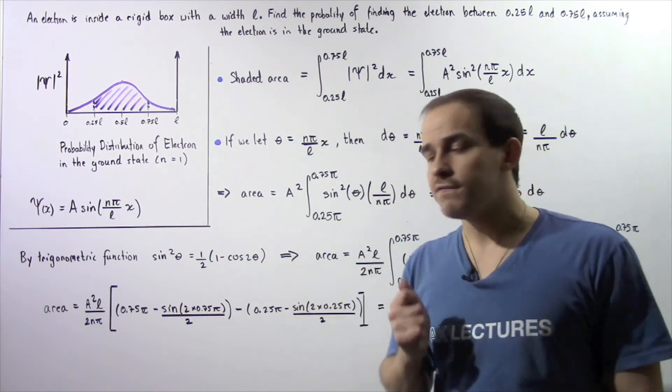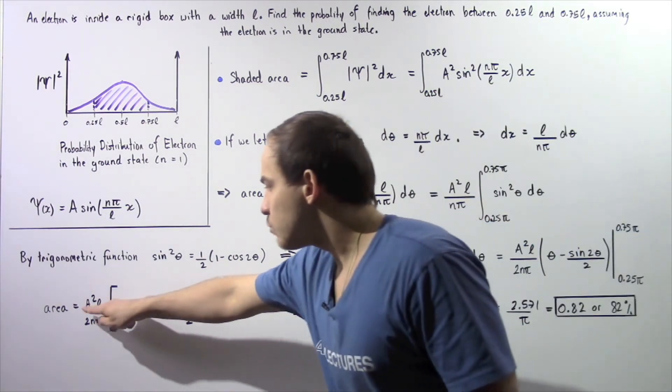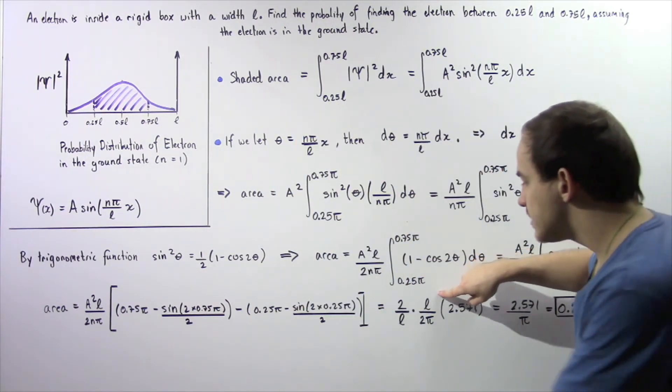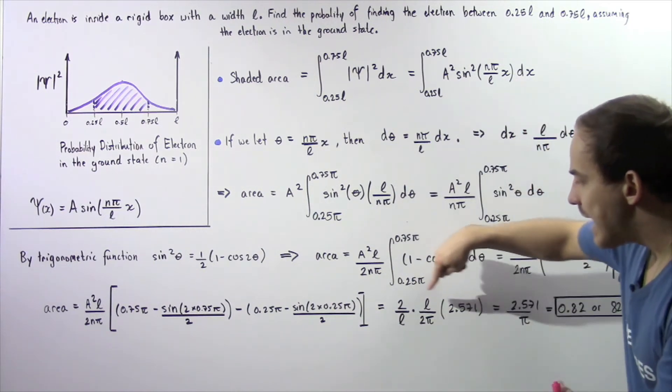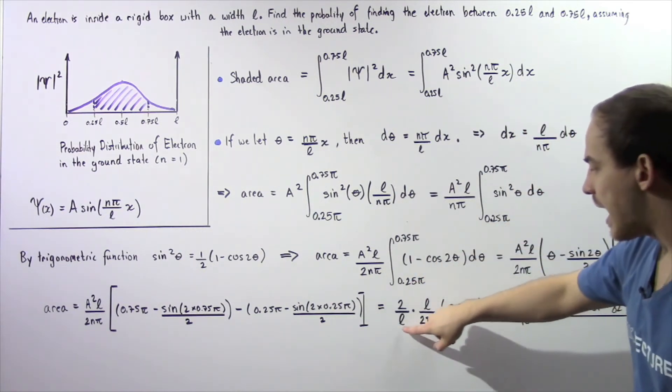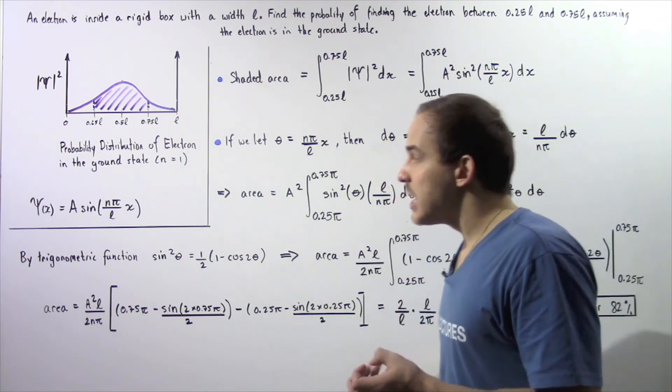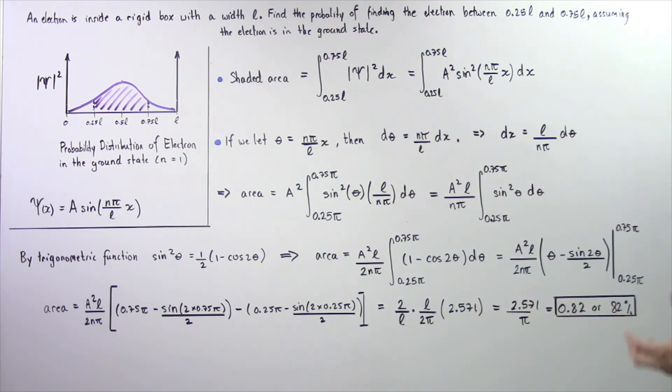The amplitude is equal to the square root of 2/L. We replace A squared with 2/L. The L's appear on top and bottom and so do the twos. We can cross out our L's and cross out the twos, and we simply have 1/π multiplied by 2.571.